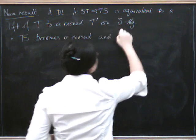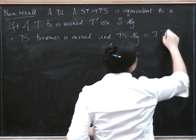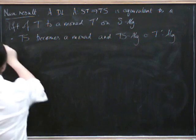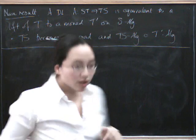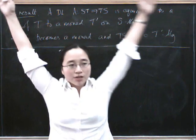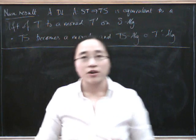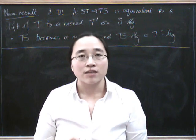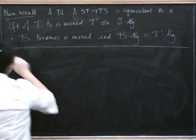And so T∘S-alge is equivalent to T prime alge. So let's just think about this last part here. What would it mean for T∘S to become a monad? I mean, just forget about this abstract result for a second and think about having a monad T and a monad S. Is T∘S necessarily a monad? Well, what would it have to be to be a monad?